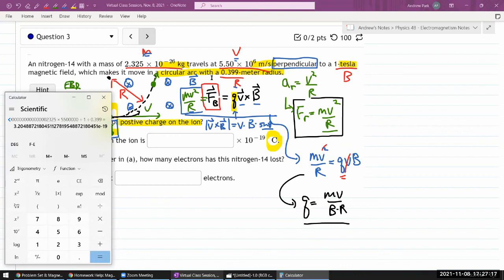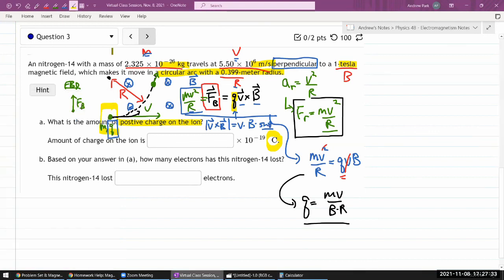If I did everything right, the units should work out to be in coulombs. I have 3.20 times 10 to the power of minus 19 coulomb. So I can just read off the mantissa there: 3.20. The amount of charge on the ion is 3.20 times 10 to the power of minus 19.